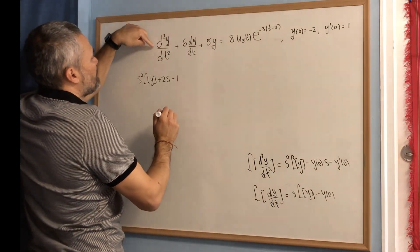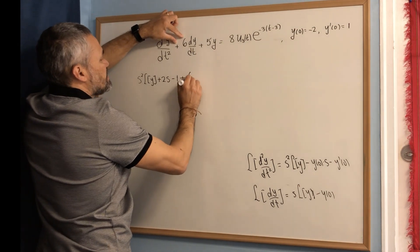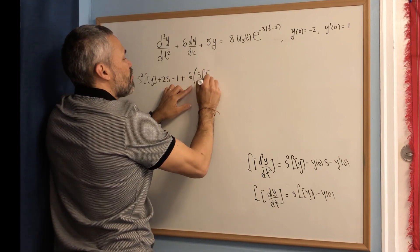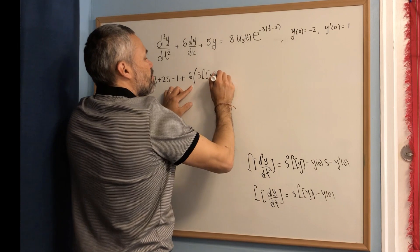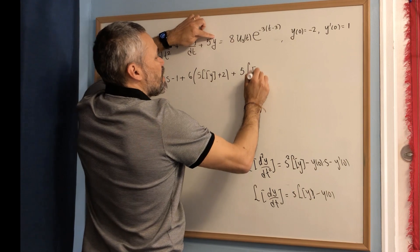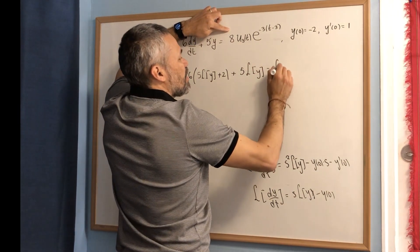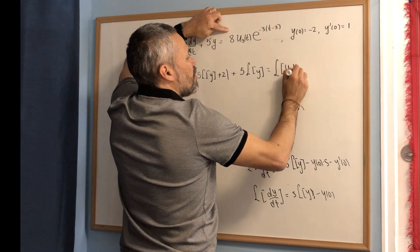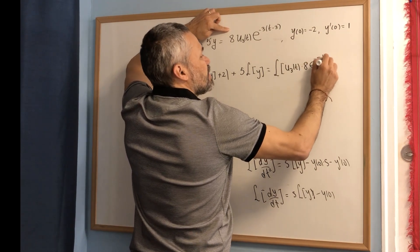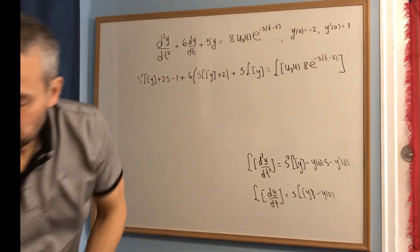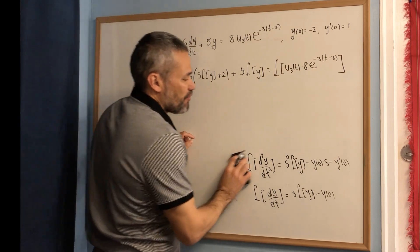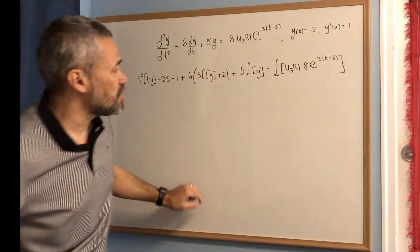This is the Laplace transform of the second derivative, plus 6 times parentheses s times L{y} minus y(0), which gives plus 2, plus 5 times L{y}, equal to the Laplace transform of u₃(t) times 8 times e to the negative 3 times (t minus 3).